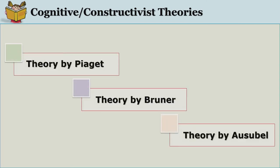Examples of cognitive or constructivist theories are: Theory of Cognitive Development by Jean Piaget, Discovery Approach to Learning by Bruner, and Meaningful Verbal Learning by Ausubel.